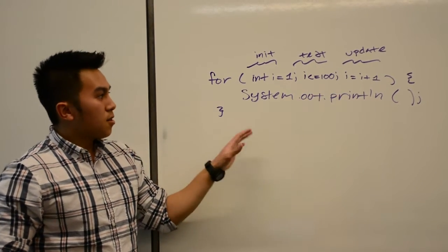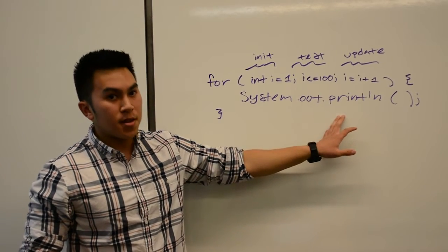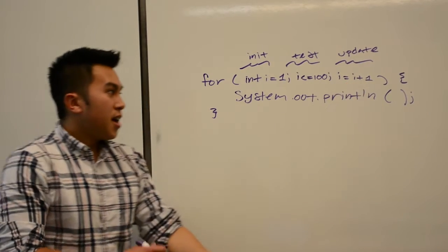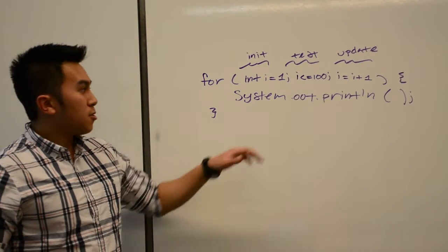If that's the case, we're going to execute this code, and then we're going to update i in the way that we've designed it to be updated, and then we're going to continue the process until we fail this test.